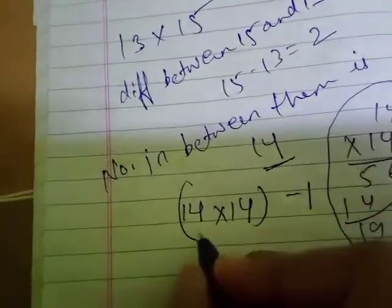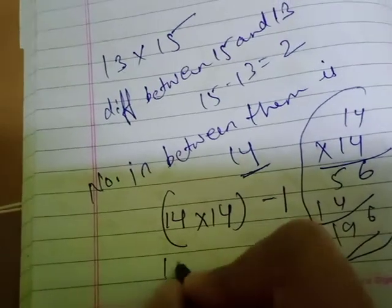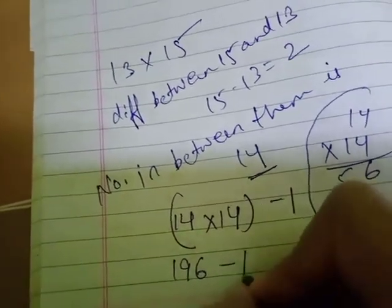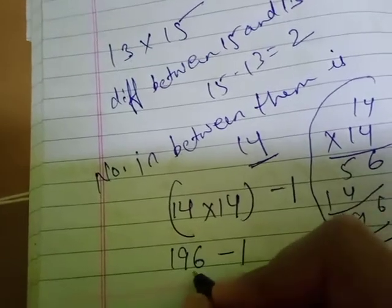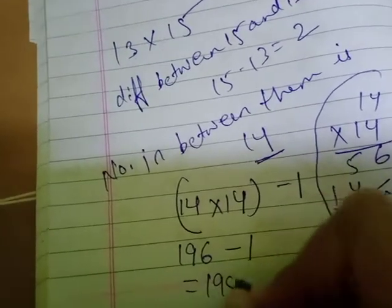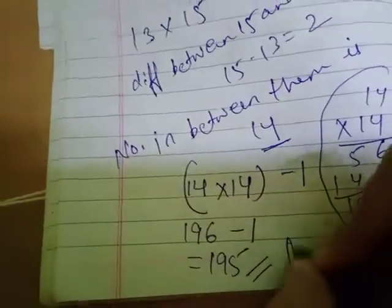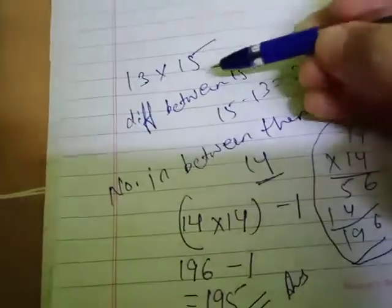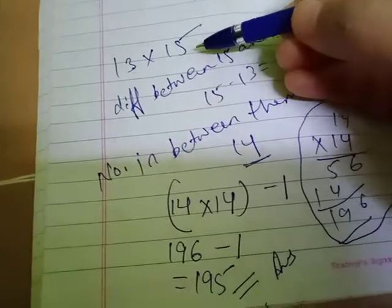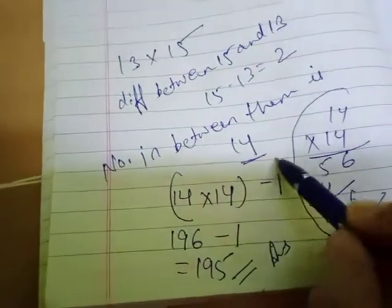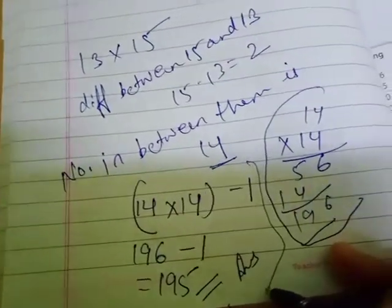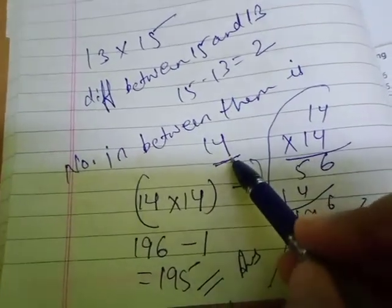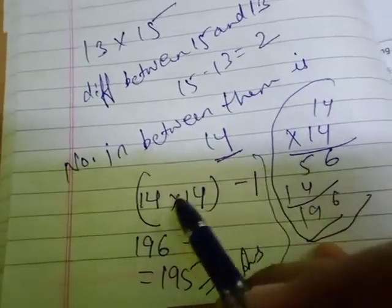14 times 14 is 196. Then minus 1: when you subtract 1 from 196, you get 195. This is your answer. To multiply 13 and 15 using the trick, write the number which comes in between them - that's 14.